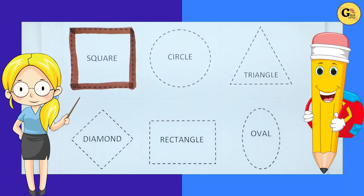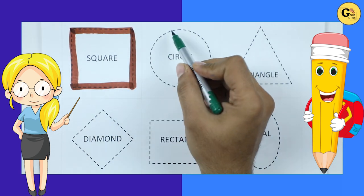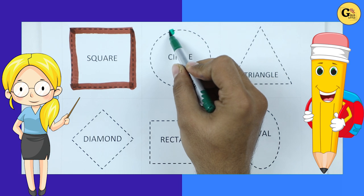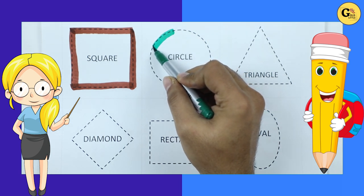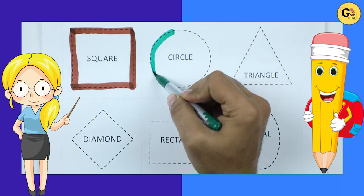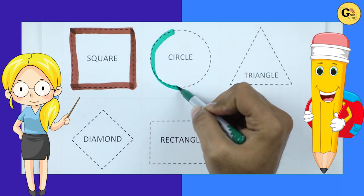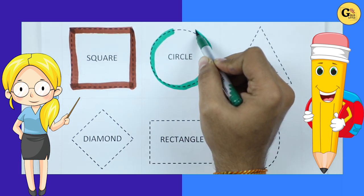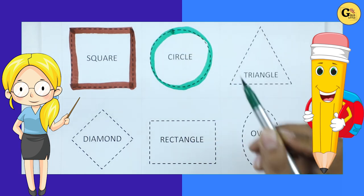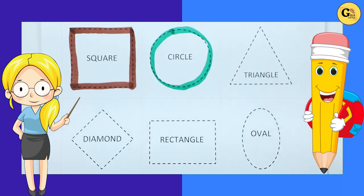It's circle. Circle with green color. Round. Circle.